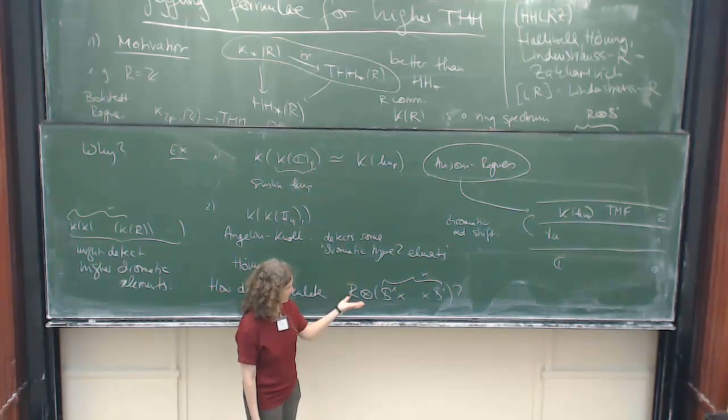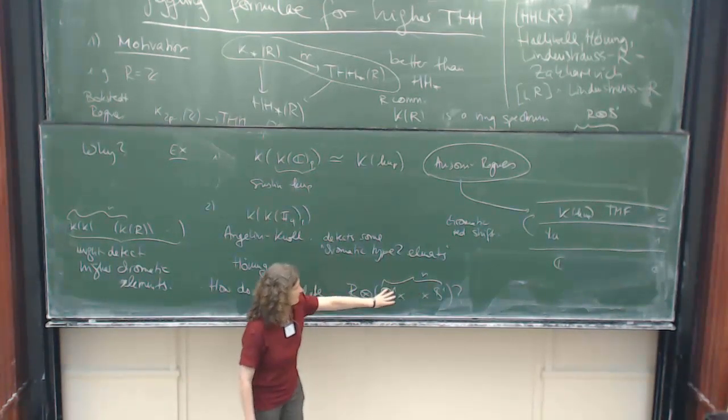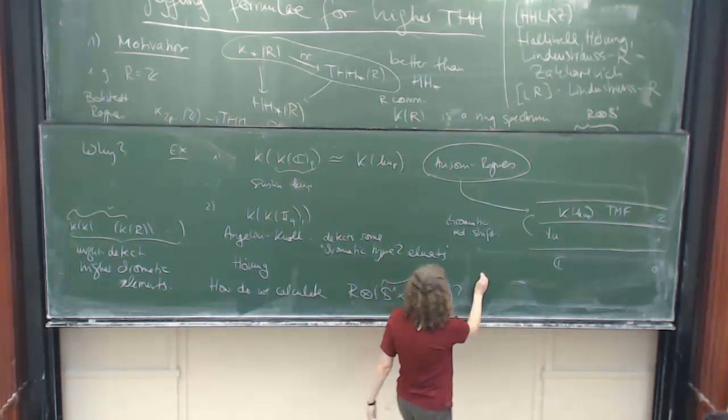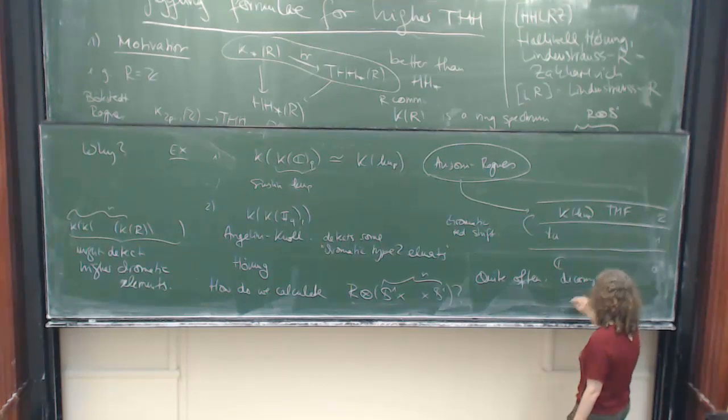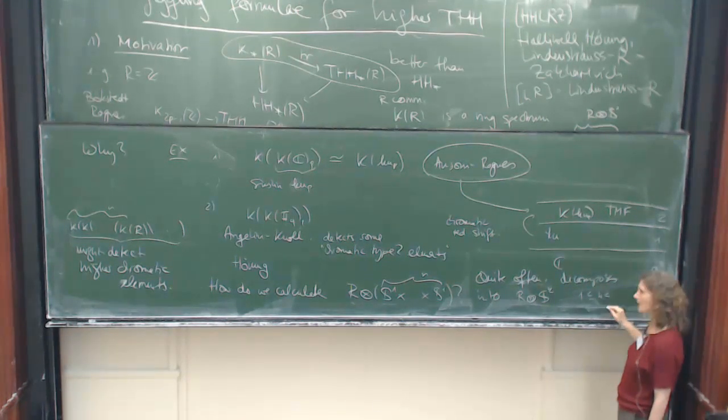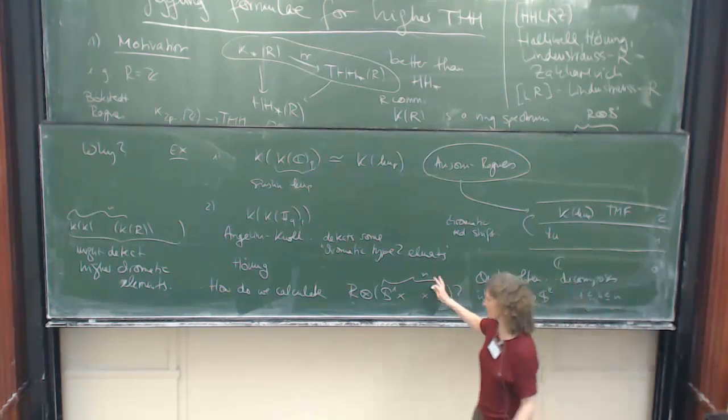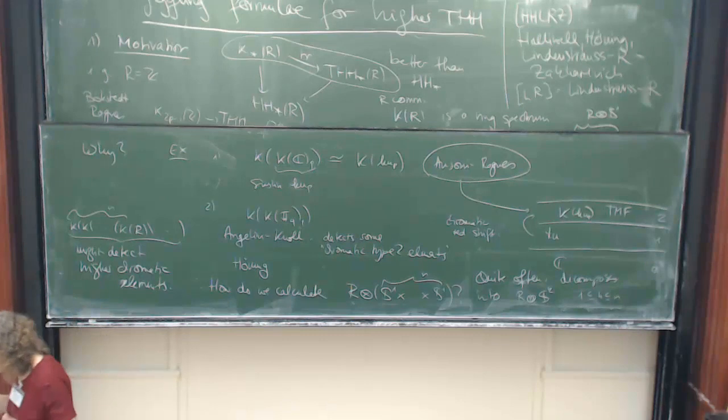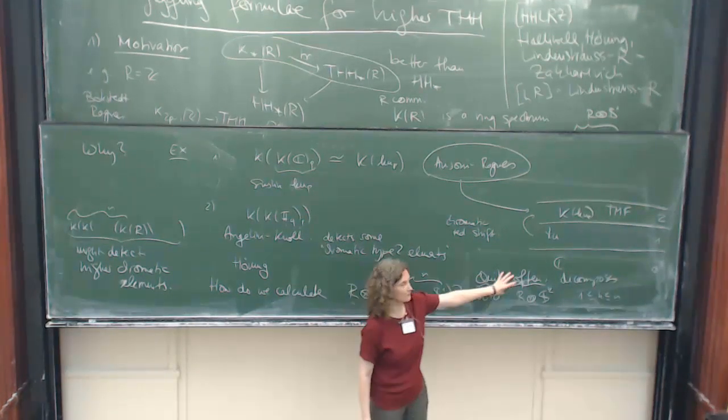And then you all know that this has non-trivial attaching maps in its CW structure. So the question is, how do you do this? But then often it turns out that this just splits, and this looks as if this space only had trivial attaching maps. So what happens, quite often it just bubbles off into spheres. So you need, you get a top one, and then you get stuff in the middle and it just decomposes.